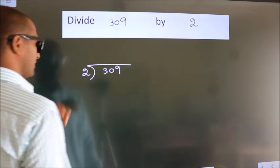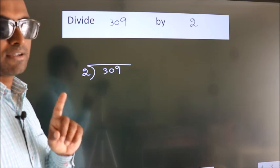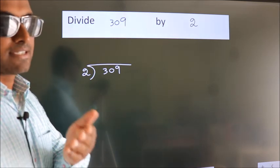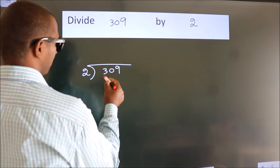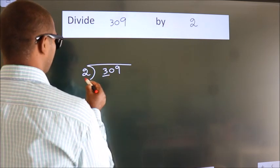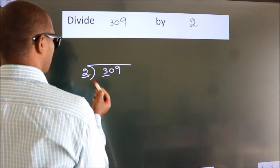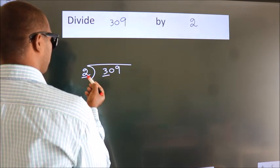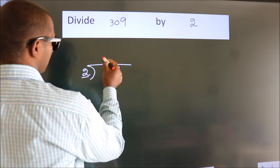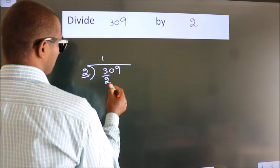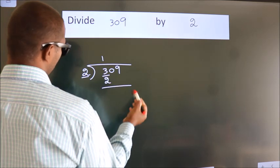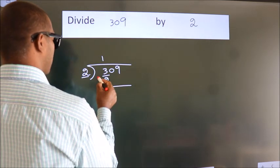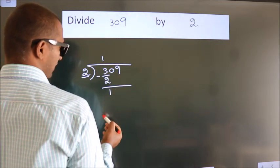This is your step 1. Next, here we have 3, here 2. A number close to 3 in the 2 times table is 2 ones, which is 2. Now we should subtract. We get 1.